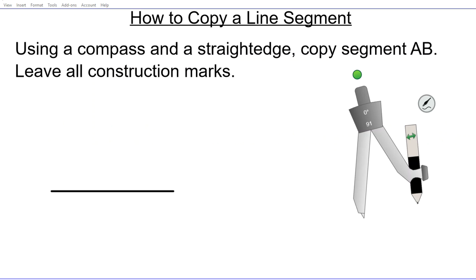Alright, instructions are as follows: using a compass and a straightedge, copy segment AB, leaving all construction marks. Okay, so let's say that this is segment AB. Let's label the endpoints, so this is A and this is B. The goal is to create a copy of this segment just using your compass and straightedge. And we also have to leave all construction marks.